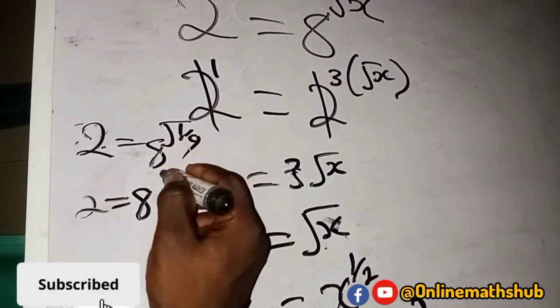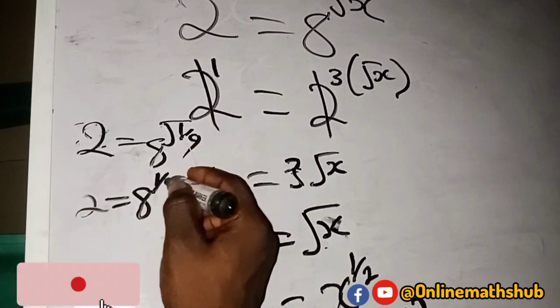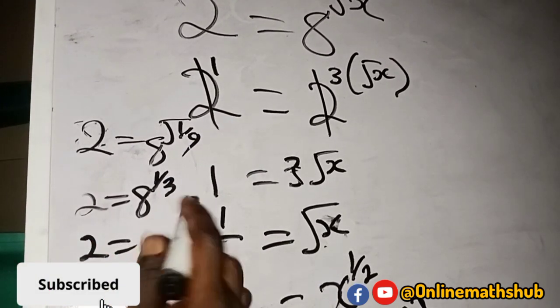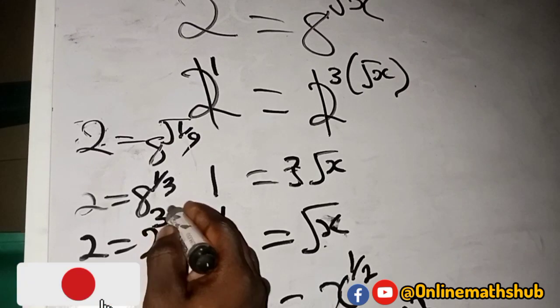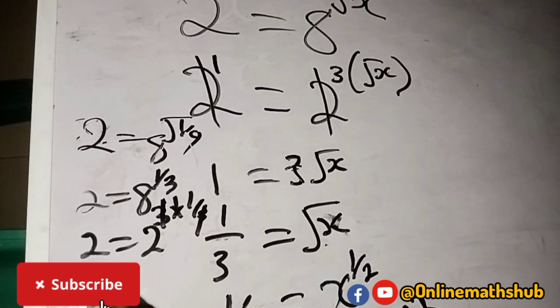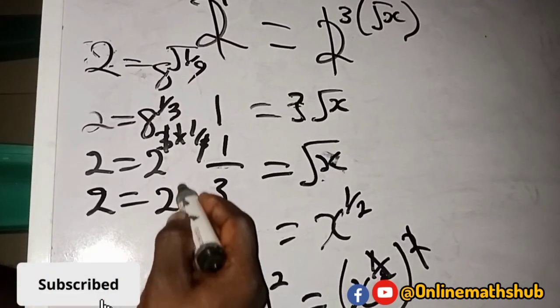I can write this 8 as 2 raised to power 3 and then multiply by 1 over 3. The 3s cancel, and I'm left with 1. So you see that 2 equals 2 raised to